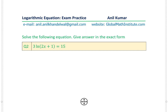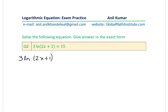Question 2 is 3·ln(2x+1) = 15. Divide both sides by 3 to get ln(2x+1) = 5.